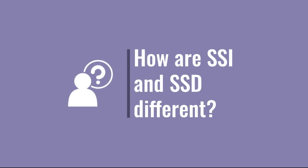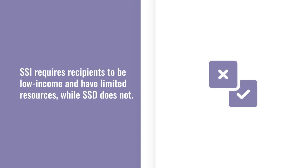What are the differences between SSI and SSD? One important difference is that SSI requires recipients to be low income and have low resources while SSD does not. This means that the SSD application typically won't ask about your income or how much your assets are worth, while the SSI application does take this information into account.